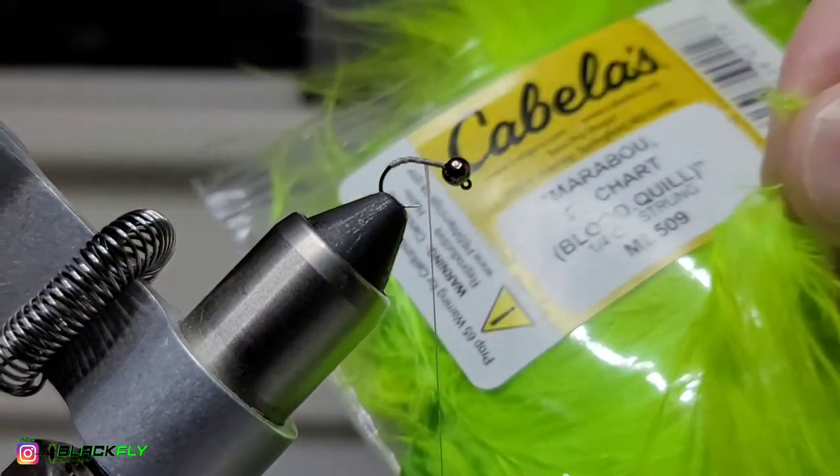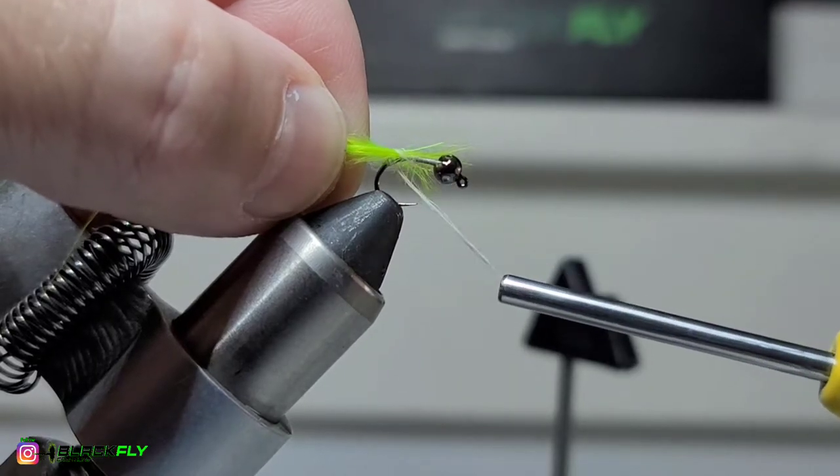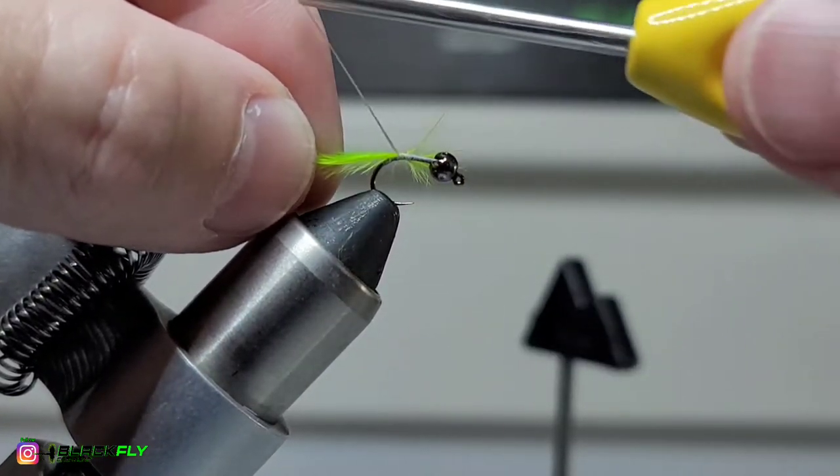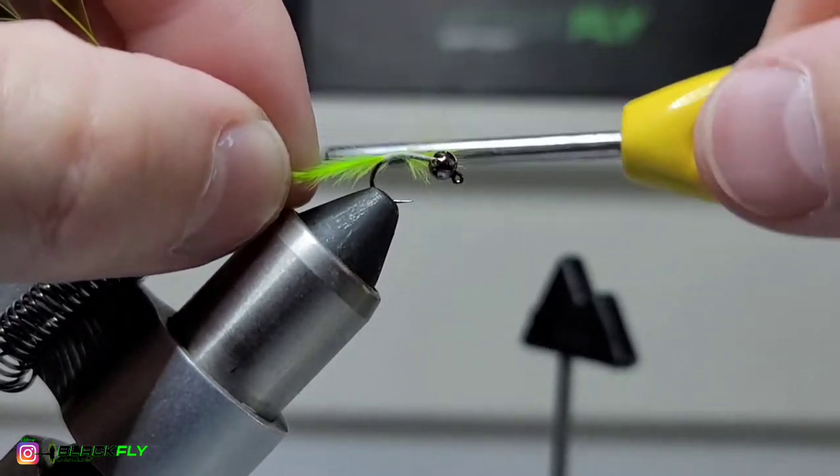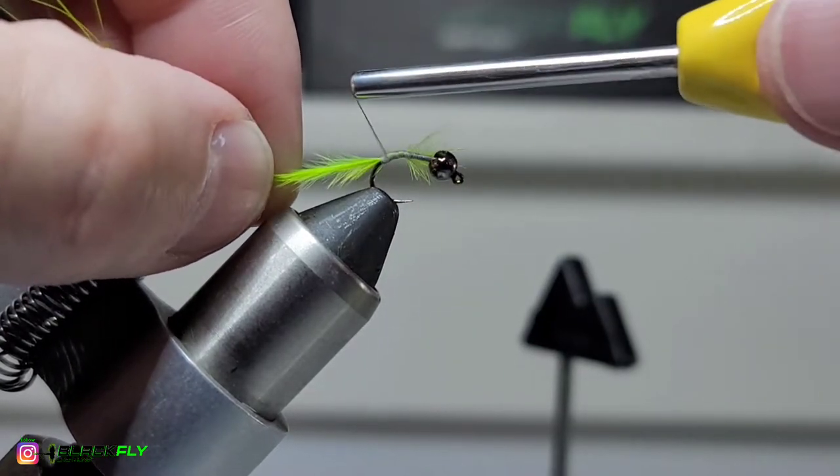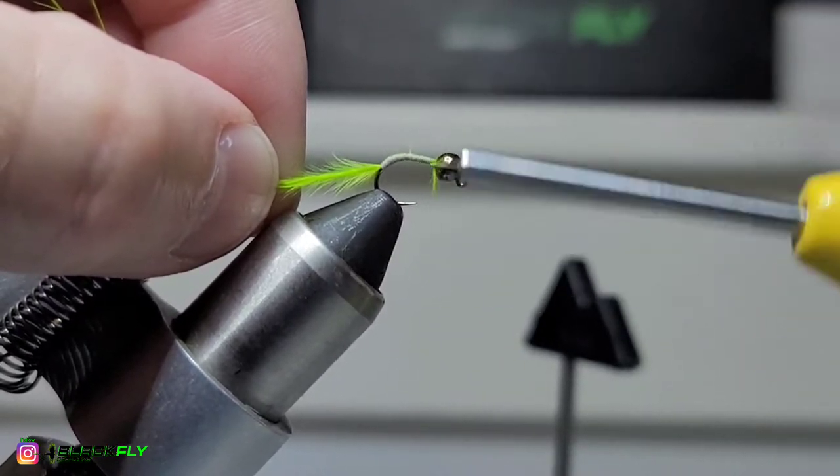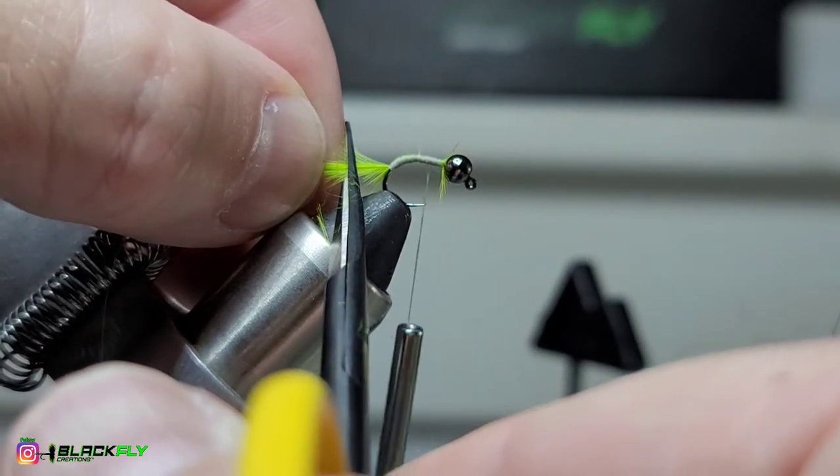Okay, so for the tail we've got some chartreuse marabou. Keep that centered on the top of that hook and I'm just going to bring it down just to where the thread ends. I just want that tail shooting down. And we only want about an eighth of an inch.